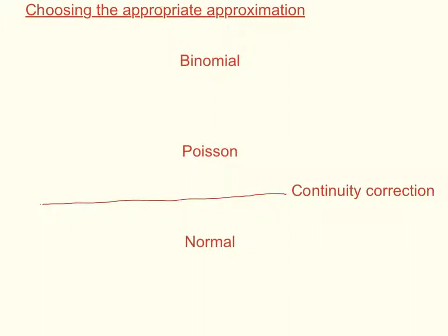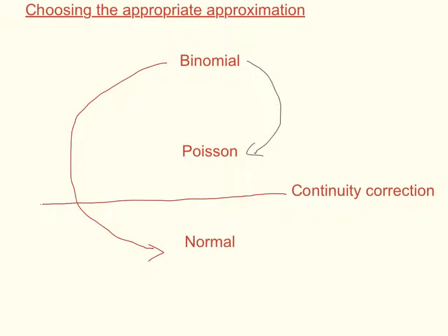In this video we're going to be looking at how we can choose the appropriate approximation. The binomial distribution can be approximated to both the Poisson distribution and to the normal distribution. The Poisson distribution can also be approximated to the normal distribution, and it can be shown with this diagram here.